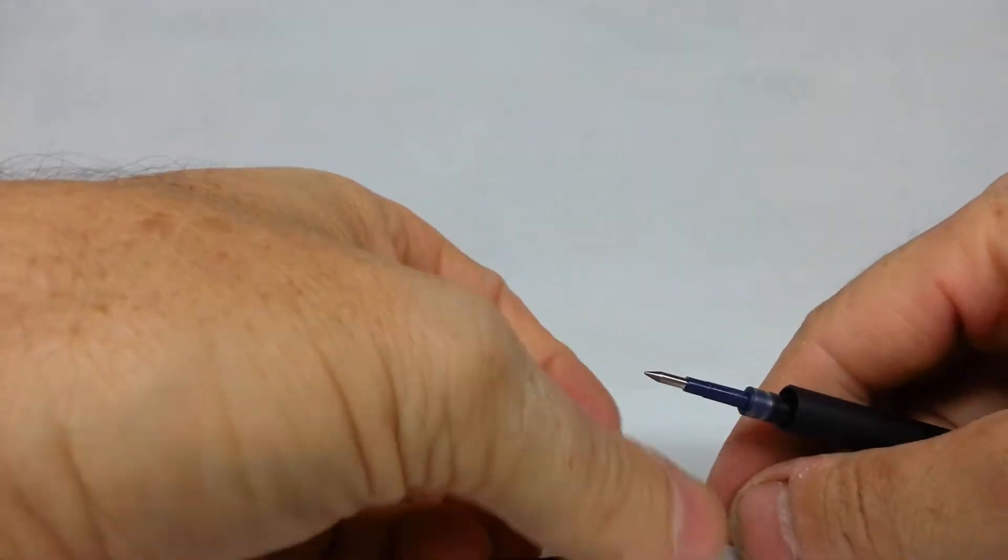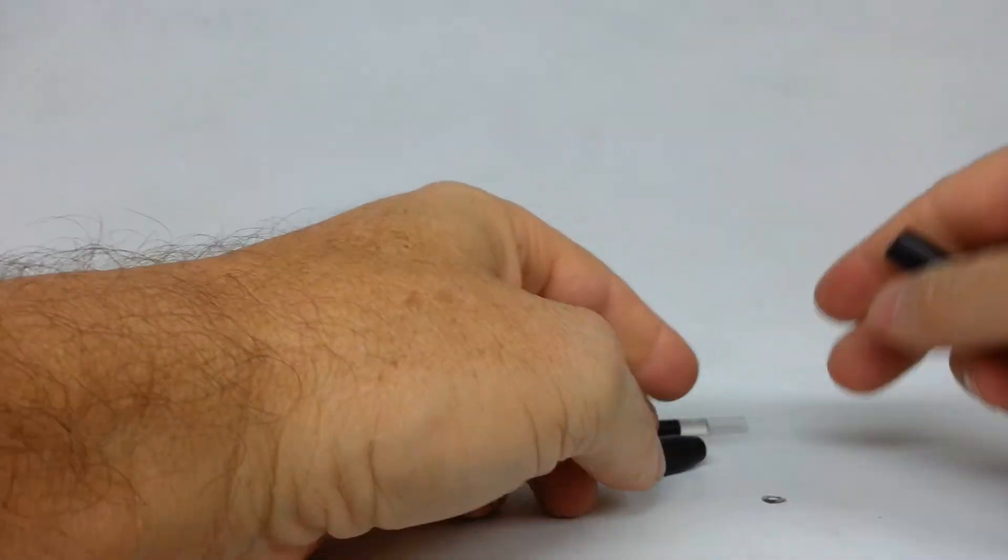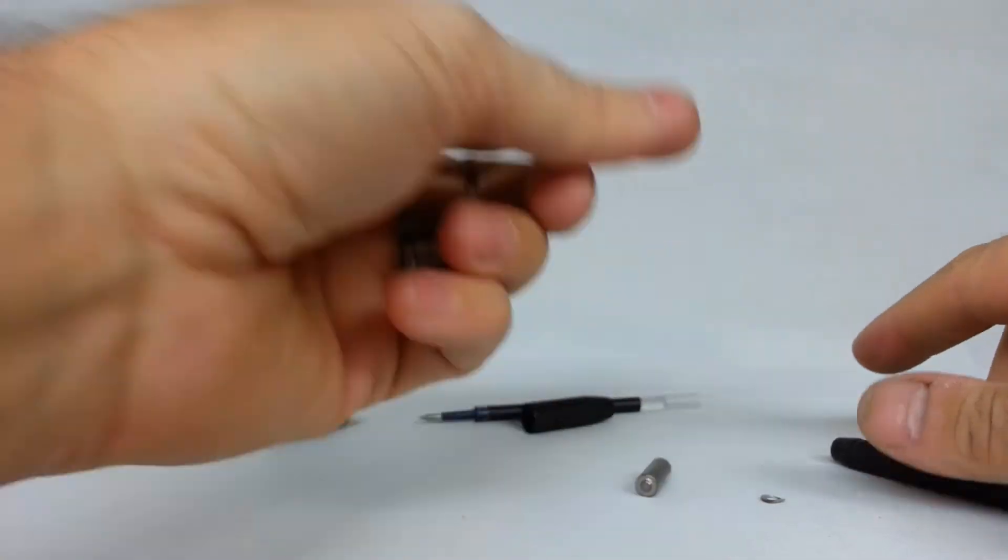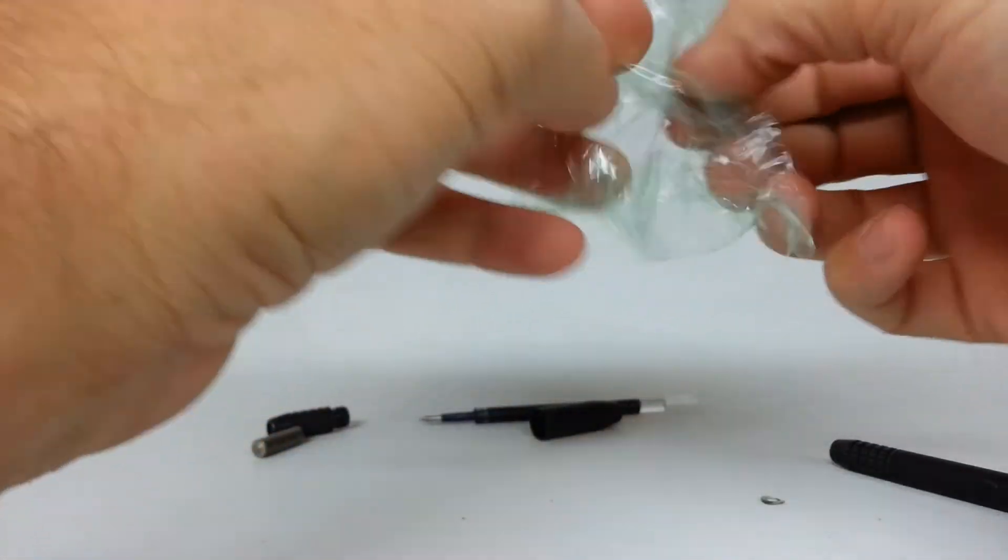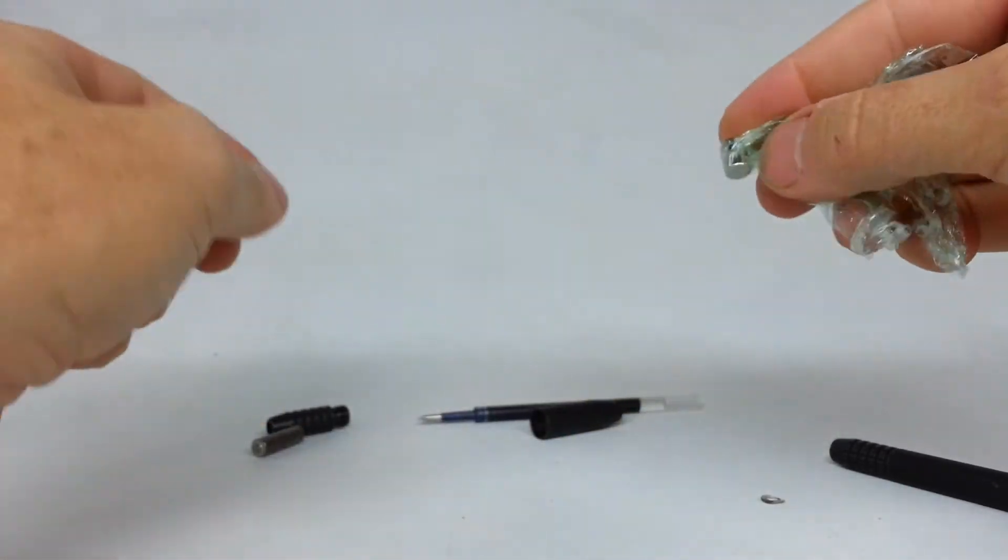So, the solution for this problem is you can take the magnet out of the tail, get a piece of saran wrap, and just wrap that magnet in the saran wrap.